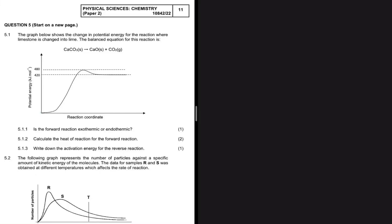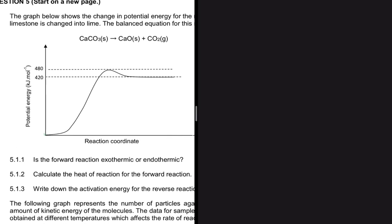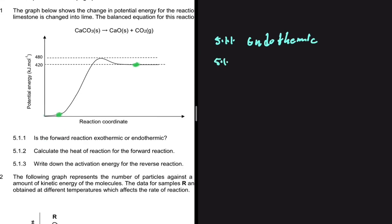It is actually easy to see that the forward reaction is endothermic — the energy of the products is greater than the energy of the reactants. So the answer to 5.1.1 is that our reaction is endothermic. For 5.1.2, we need to calculate the heat of reaction for the forward reaction. The enthalpy change is the energy of the products minus the energy of the reactants.